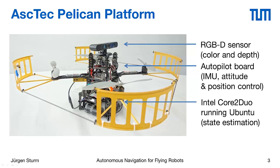It contains a full computer running Ubuntu. We have an Intel Core 2 Duo, but they also sell it with an i5 so you can have really reasonable performance. In the video you've seen before, we used this onboard PC for Kalman filtering and the autopilot board for position control, but we still had an external computer running the 3D mapping because at the moment we need a graphics card for it.